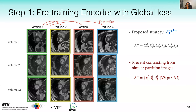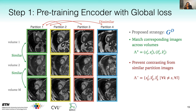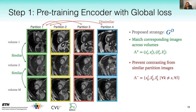For the second strategy, we can also define better positive pairs beyond relying on random transformations. We include images from the same partition across different volumes into the positive set, modeling complex similarity cues. An image from volume one partition one and volume two partition one cannot be derived from each other by any transformation, so we are modeling higher-level similarity cues. After this optimization, we want a cluster for each partition in the representation space — with four partitions, we get four clusters.